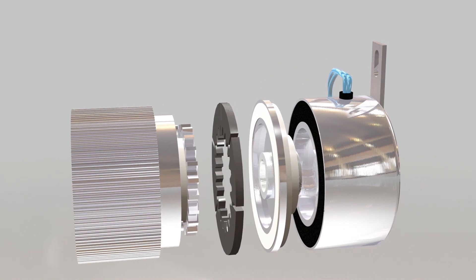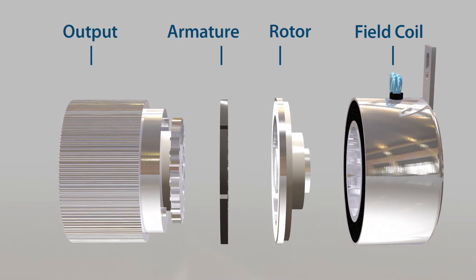The key components of the clutch are: output, which can be directly connected or have a pulley or timing belt like the example shown here; armature; rotor; and field coil.